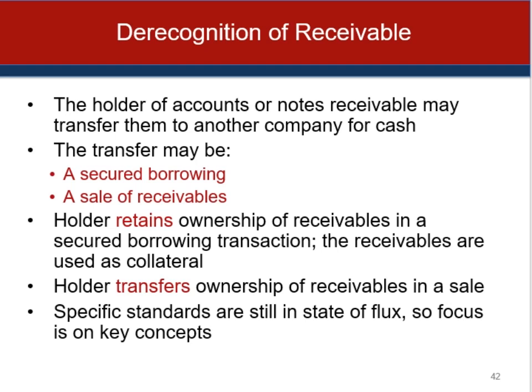Receivables are often used as collateral in borrowing transactions to generate immediate cash — either through secured borrowing or sales of receivables. In secured borrowing, the creditor often requires the debtor to designate or pledge the receivables as security; if the loan isn't paid when due, the creditor has the right to collect the receivables. A company should account for transferred assets in a secured borrowing in the same way it accounted for them prior to the borrowing, and account for the liability in accordance with accounting policies for similar liabilities.